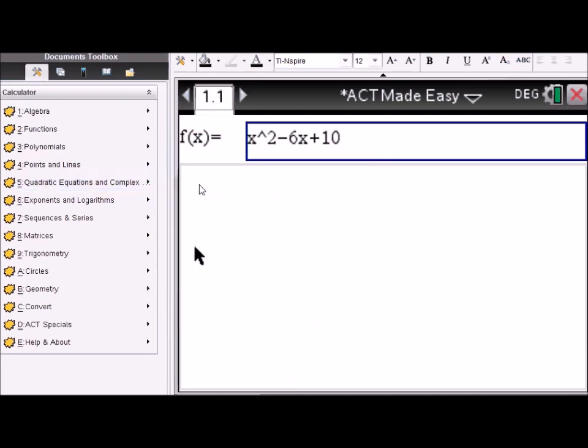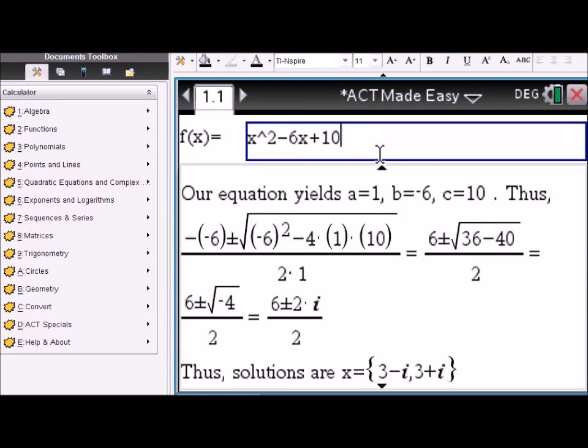You can also do the quadratic equation step by step. Just enter the equation and the coefficients are extracted: 1, 1, negative 6 and 10, plugged into the quadratic formula. It's simplified step by step until you arrive at the solutions 3 minus i and 3 plus i.